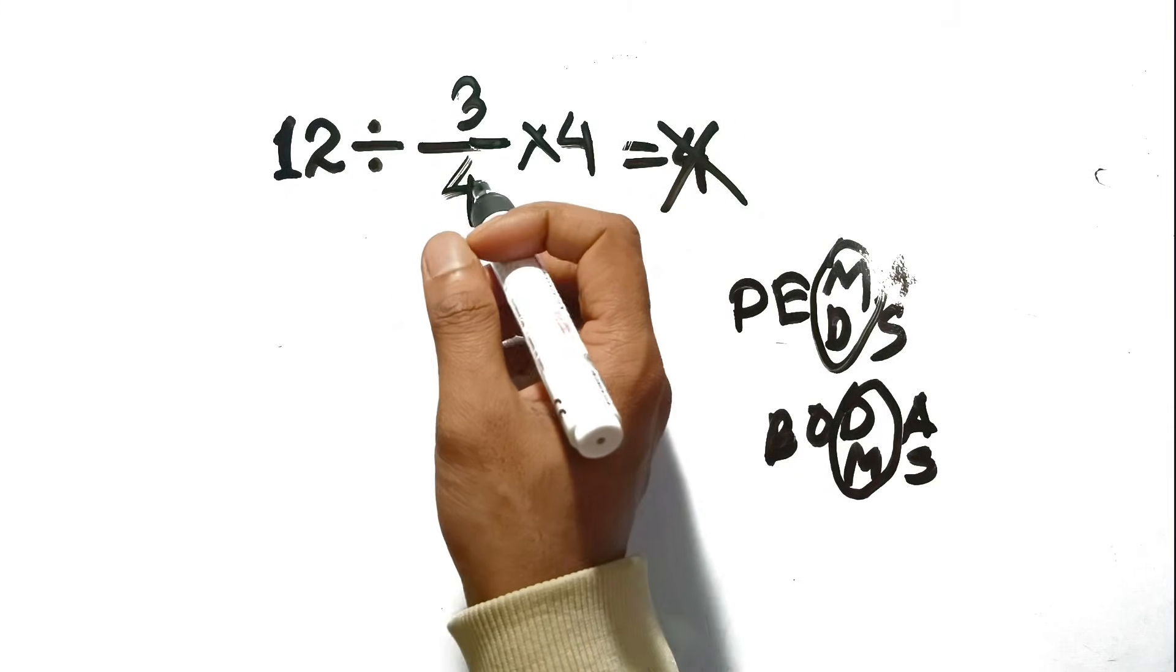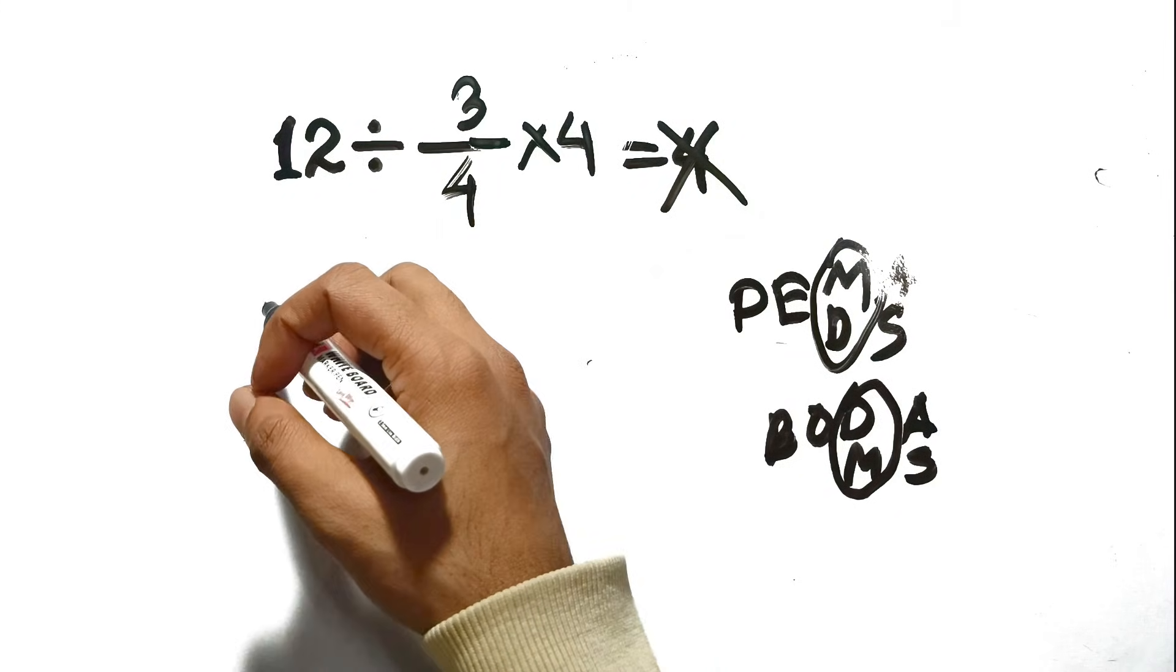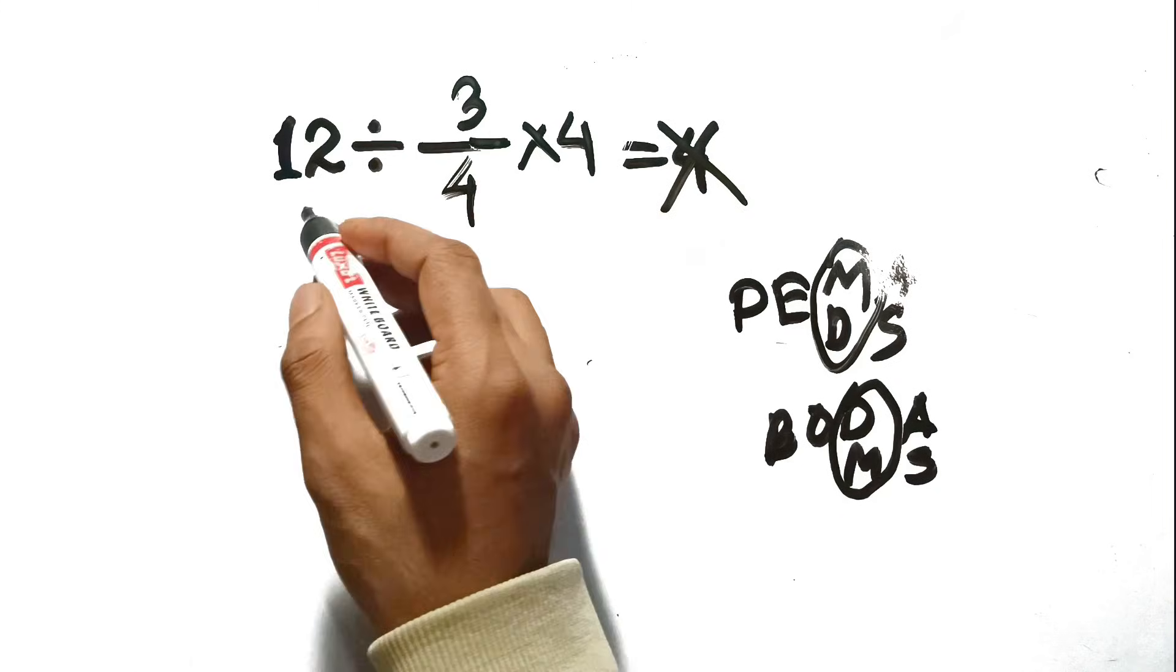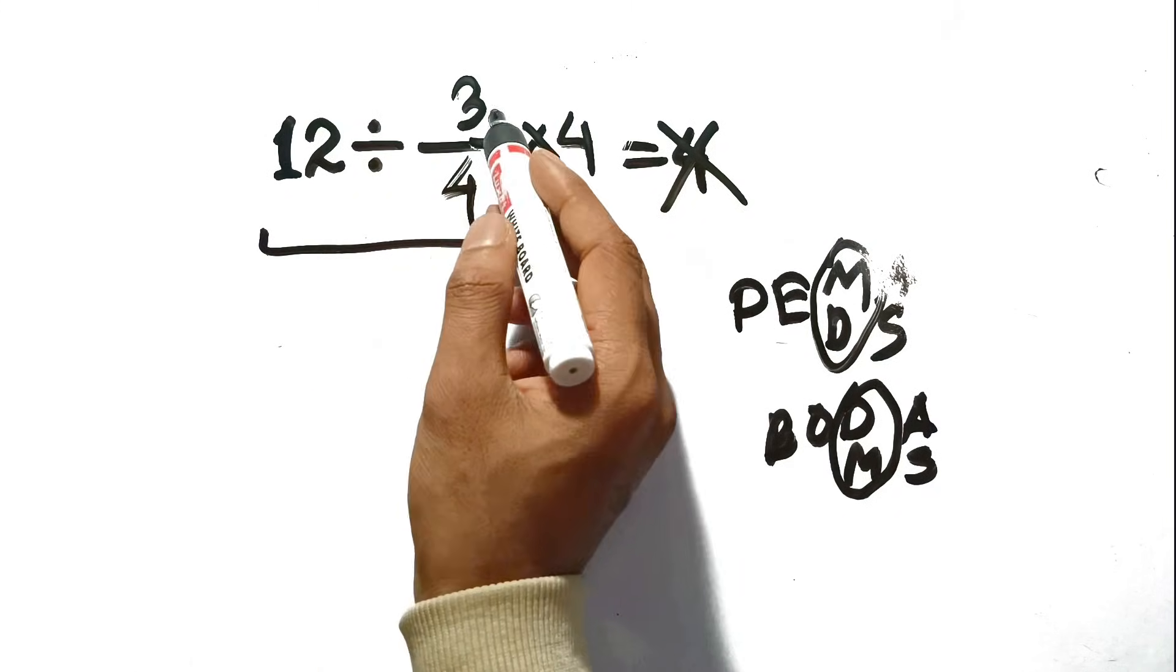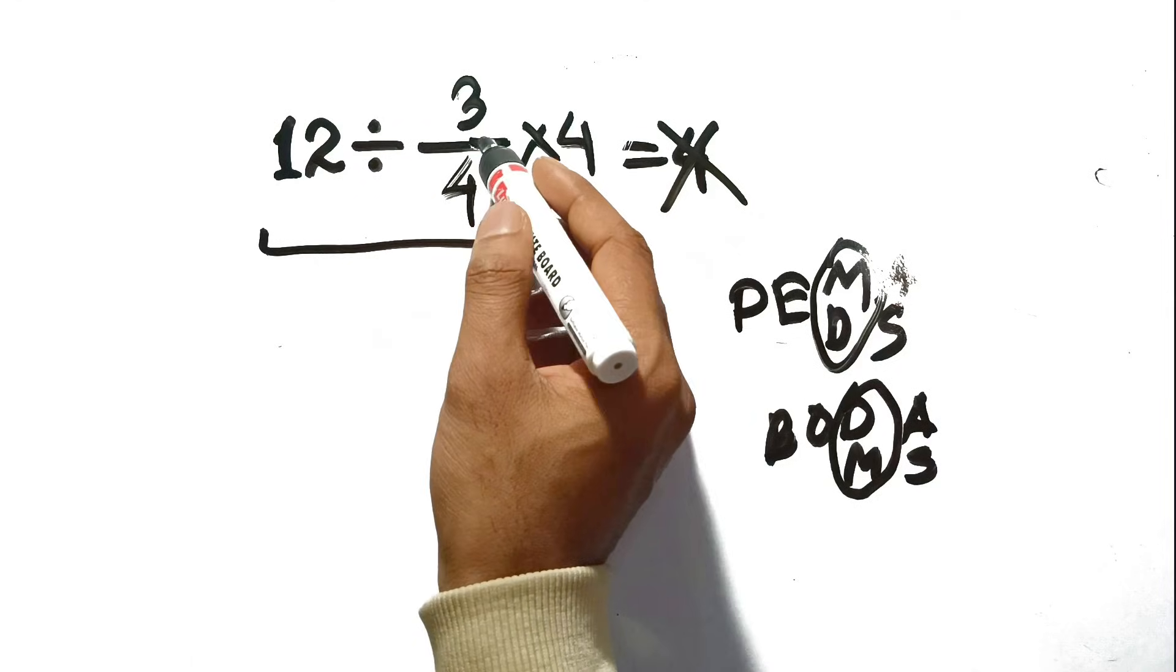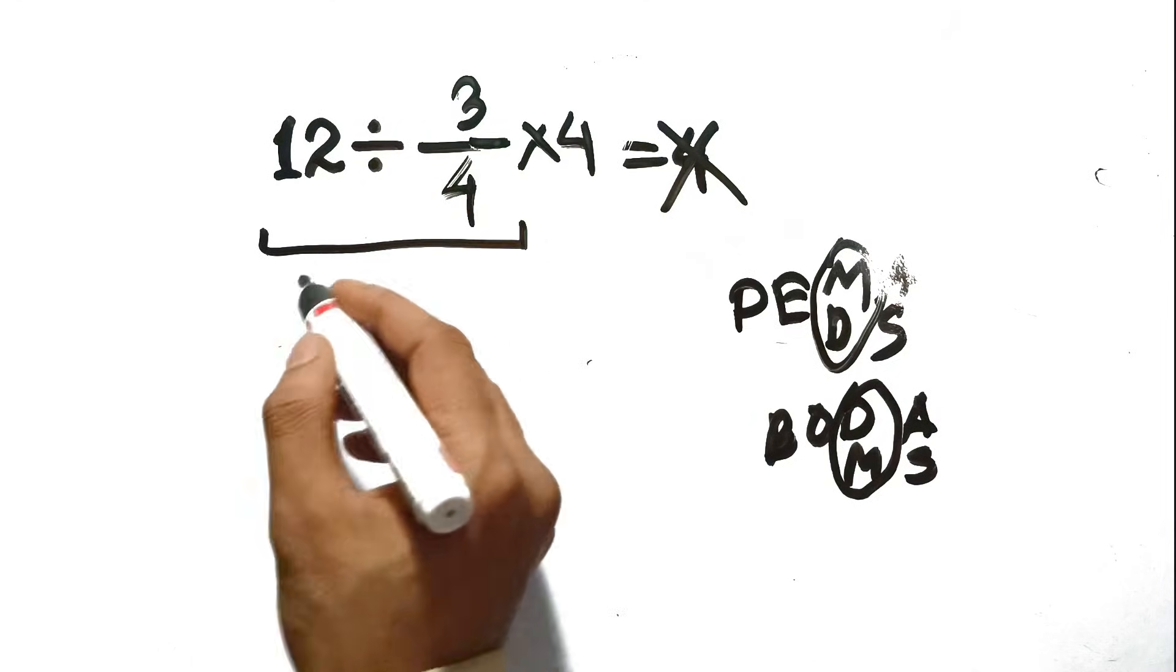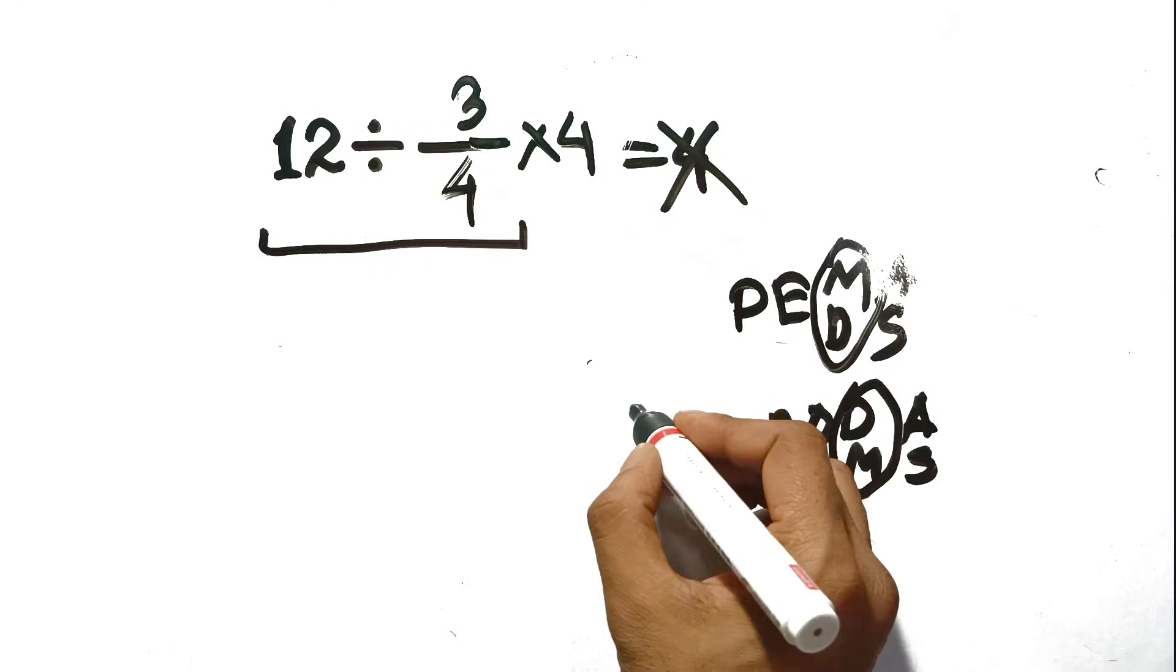So, let's do it the right way. No shortcuts. We start at the far left. 12 divided by 3 fourths. Now, remember how we divide by a fraction? We don't. We multiply by the reciprocal. You might remember the phrase keep, change, flip from school.